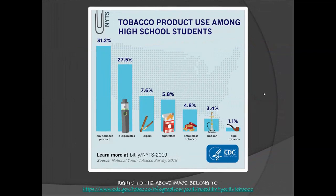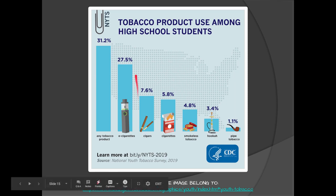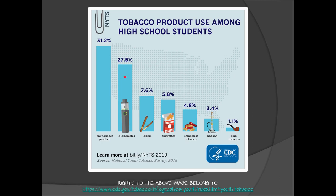On this graphic showing tobacco product use among high school students: any tobacco product is 32%. E-cigarettes are the big one at 27.5% — things like vapes or Juuls. Then trickling down: cigars at about 7.5%, cigarettes at almost 6%, smokeless tobacco like dip, snuff, and chew at almost 5%, hookah at around 4% — you may have seen hookah lounges where you have to be at least 18 to get in, which explains the drop-off — and then pipe tobacco.